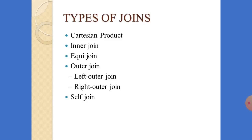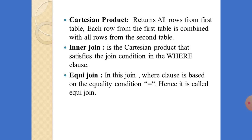The Cartesian product returns all rows from the first table. Each row from the first table is combined with all the rows of the second table. It retrieves the records which satisfy the condition — that means the first row of the first table will be combined with all rows in the second table. If a particular column matches, then it will retrieve the records. That is called a Cartesian product.